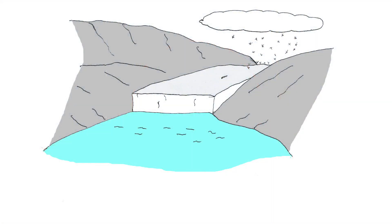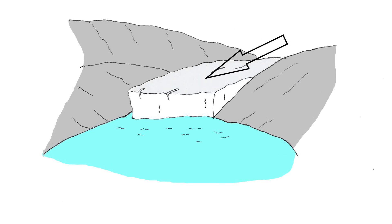First, a glacier is a volume of ice which does never melt completely during summer. These are found many places in the world, for example in the Himalayas. In this sketch you can see a glacier in a mountain valley and a lake in front. There's snow building up on top of the glacier. The glacier is pushed forward and down due to the increased weight on the top.